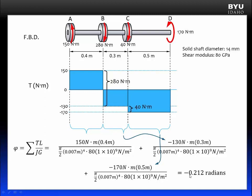And we get for our answer negative 0.212 radians. According to the right-hand rule, a negative sign on the answer indicates that the angle of twist is occurring in a clockwise direction. And we're done.